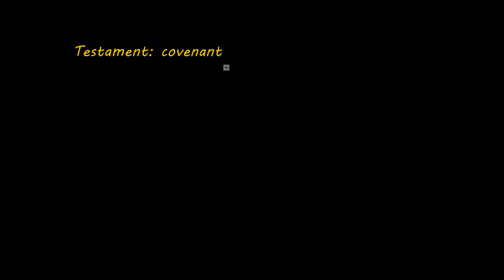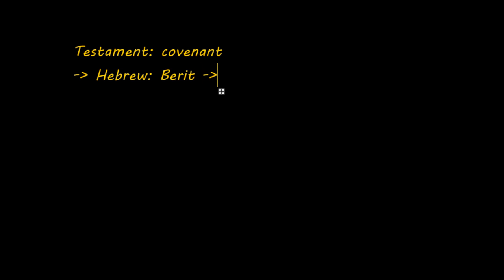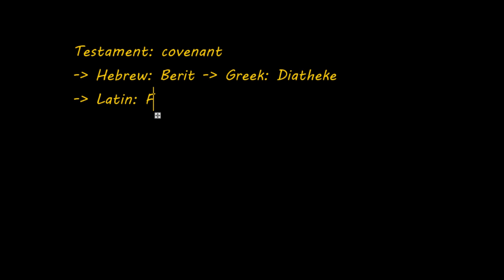The first one is testament. I'm going to talk about the meaning of the word testament, and it actually means covenant. It's a very biblical word. It appears in the Bible many times — at least the word covenant. It comes from the Hebrew word berit, which means covenant. And in the Greek translation of the Old Testament it's translated as diatheke. Even later, in the Latin, it was translated as either foedus or as testamentum.